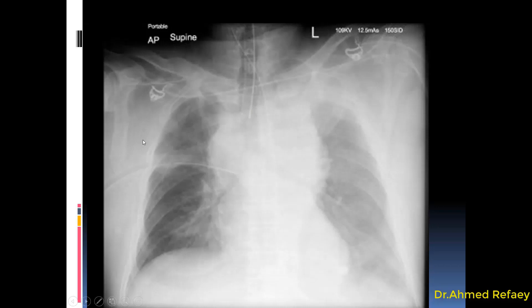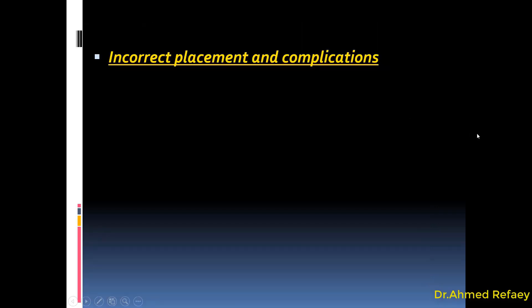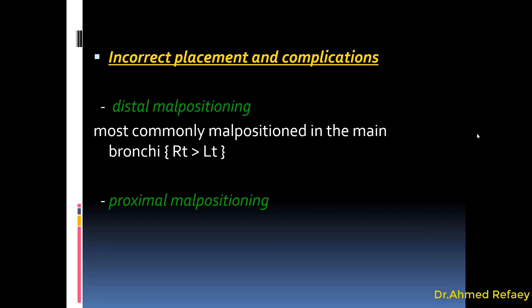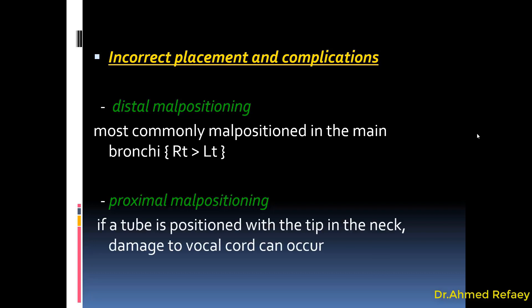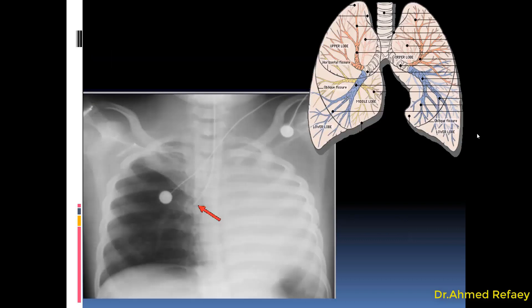Regarding incorrect placement and complications of the endotracheal tube: there are one of two things — either distal malpositioning or proximal malpositioning. In case of distal malpositioning, the tube is most commonly malpositioned in the right main bronchus, which makes a more obtuse angle with the trachea than the left main bronchus. In proximal malpositioning, the tube tip is positioned in the neck or above the level of the medial end of the clavicles, with a possibility of damage to the vocal cords.